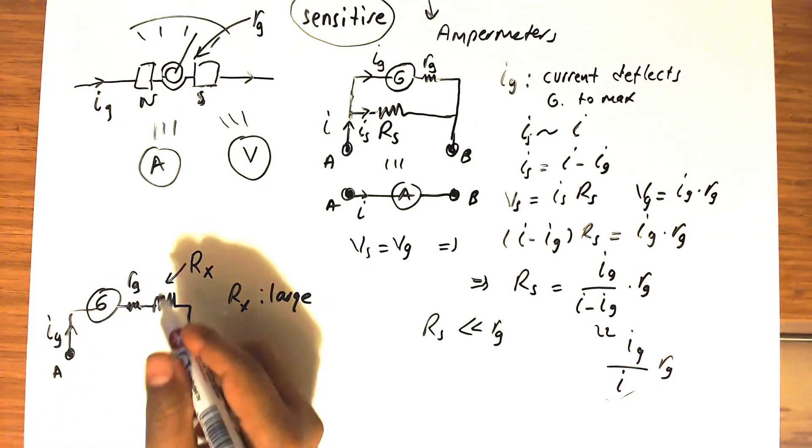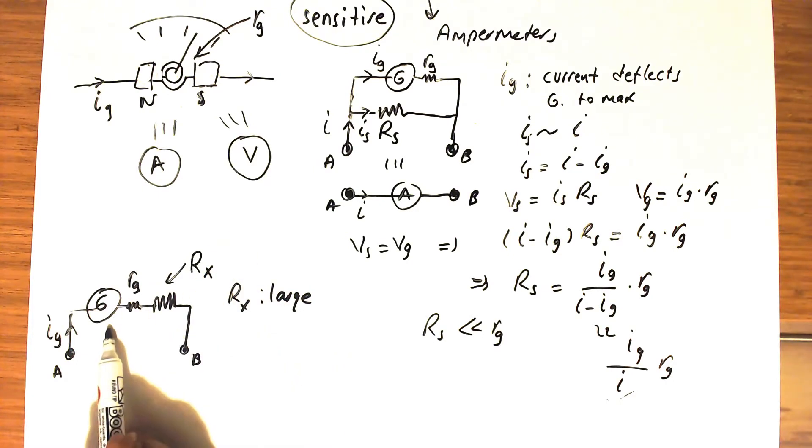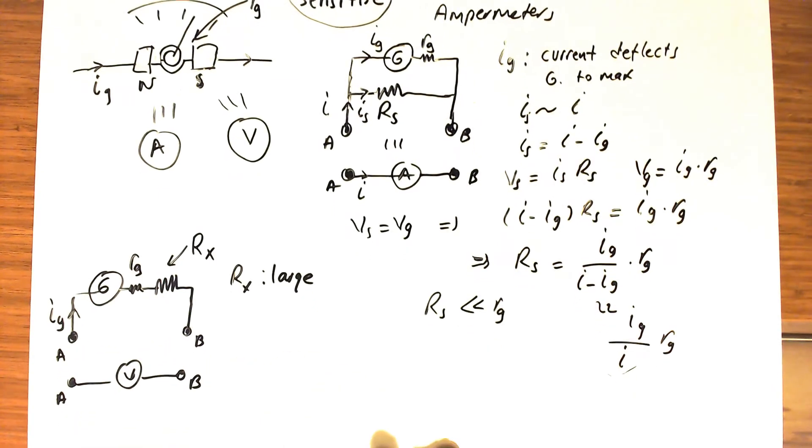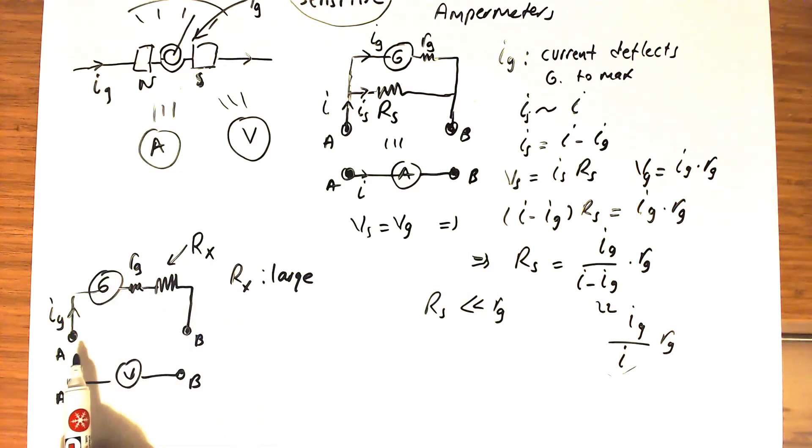We must use a very large auxiliary resistance so that we can use the galvanometer as a voltmeter. This is the voltmeter with terminals A and B. This is the way we use a galvanometer to measure the potential difference between any two points like A and B.